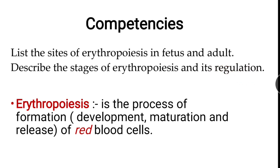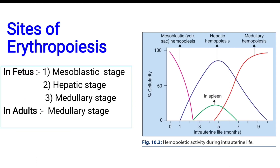We will start from the basics. The definition of erythropoiesis: erythropoiesis is the process of formation which includes the development, maturation, and the release of red blood cells. I also discussed this in earlier videos — if you want, you can check that one.